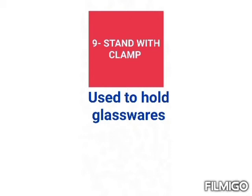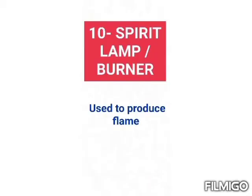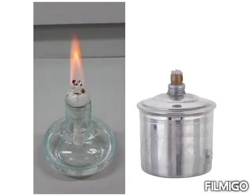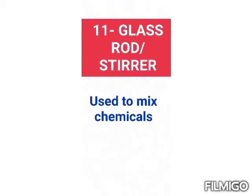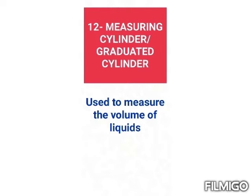Next is the stand with clamp, which is used to hold glassware during reactions. Next is the spirit lamp or burner, which is used to produce flame and uses spirit or alcohol. Next is the glass rod or stirrer, which is used to mix chemicals.